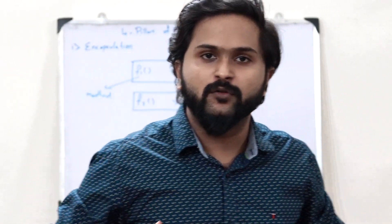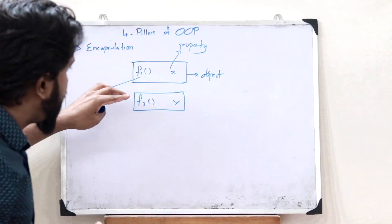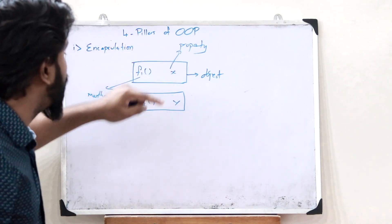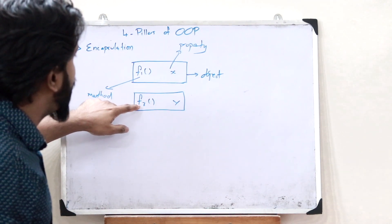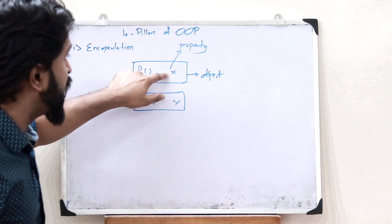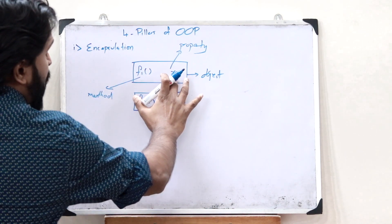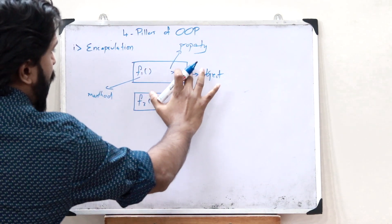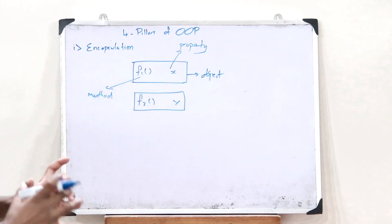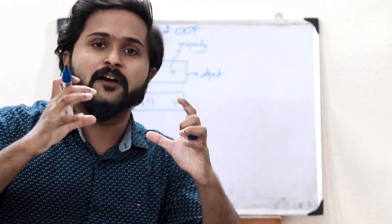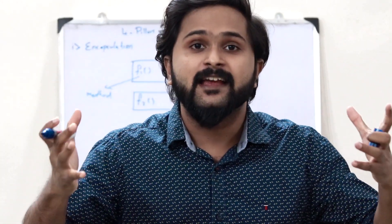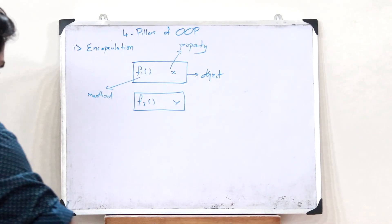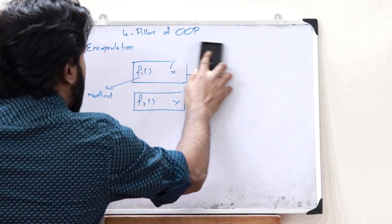An interesting fact about encapsulation is that a particular variable is not accessible outside its object — that is, a function like f2 cannot access a variable it is not bound to. That variable is only available to the function it is bound with. This simple process of binding related functions and variables together is encapsulation, the first pillar of object-oriented programming.